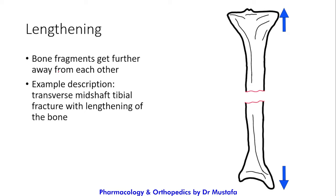The final pattern is lengthening, which is the opposite of shortening — the bone fragments move further away from each other. An example description would be: 'transverse mid-shaft tibial fracture with lengthening.'